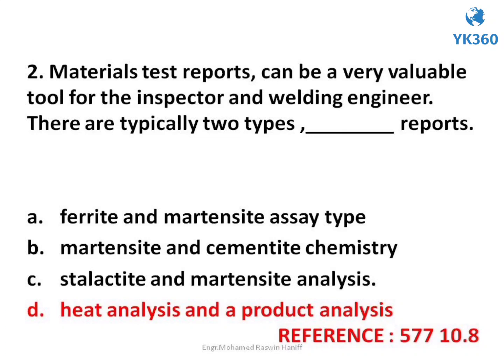Question number 2. Materials test reports can be a very valuable tool for the inspector and welding engineer. There are typically two types of reports — options are: A. Ferrite and martensite assay type, B. Martensite and cementite chemistry, C. Stalactite and martensite analysis, D. Heat analysis and a product analysis. Answer is option D. Heat analysis and a product analysis.